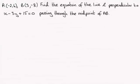Hi there. Now in brief then for this question we're given these two points A and B with coordinates (-2, 6) and (3, -8) and asked to find the equation of the line L perpendicular to x - 3y + 15 = 0 passing through the midpoint of AB.